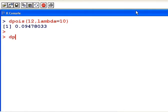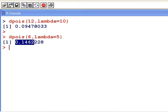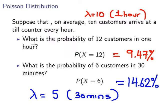Okay. dpois. So 6 is the value we're interested in and the Poisson mean is 5 for half an hour. So the answer is 14.62%.